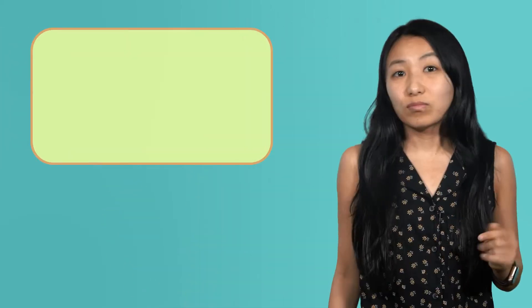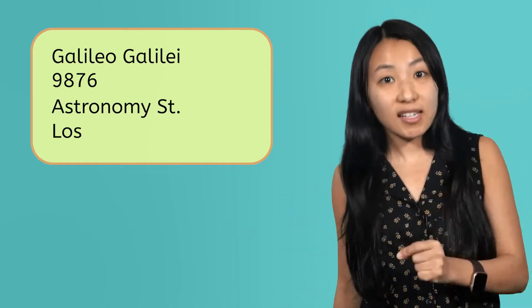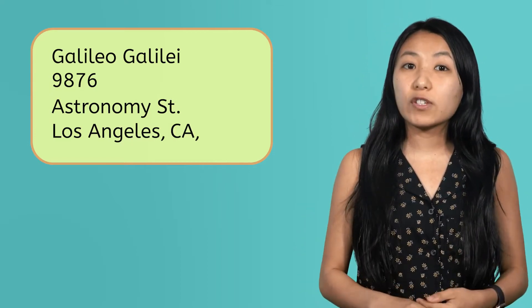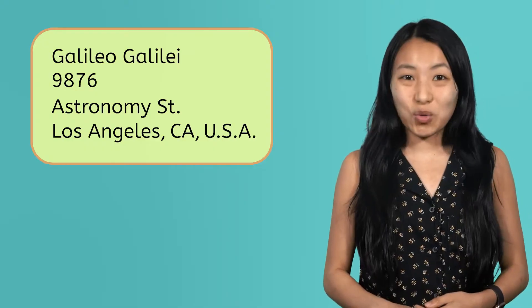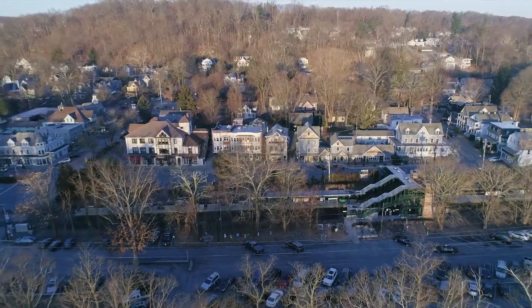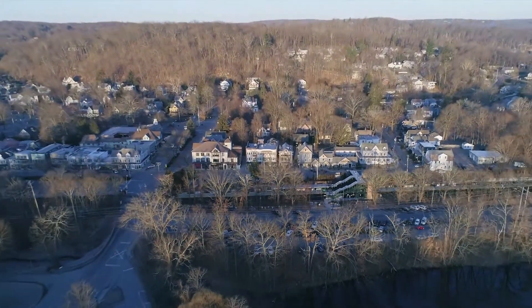Think about when you write down your address. What comes first? That's right — your house or apartment number. What's after that? The street you live on, followed by the city that your house is in. Then you might write the specific state or province you live in, followed by the country. Notice how we begin with the smallest descriptor for where we live — our house — then we work outward to larger descriptors, like our city or town, state, and country.